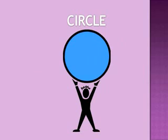This is a circle. It is made with one continuous line. It doesn't have any straight sides.